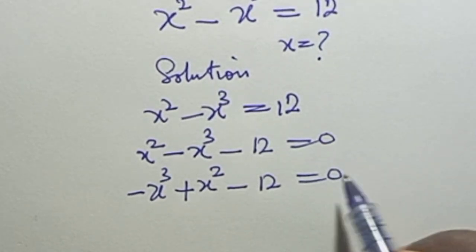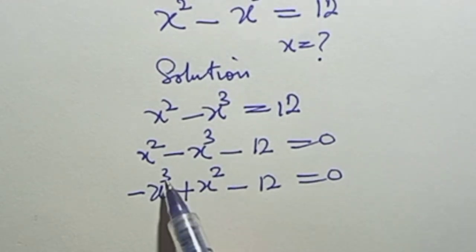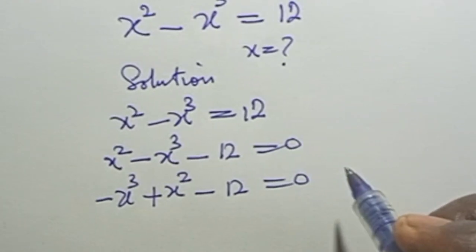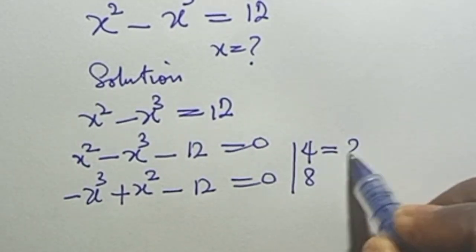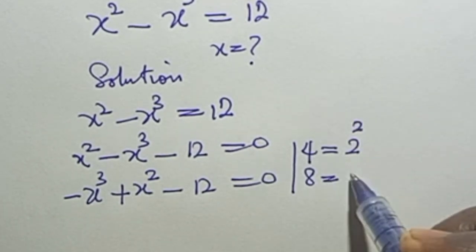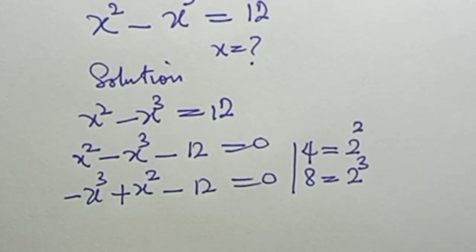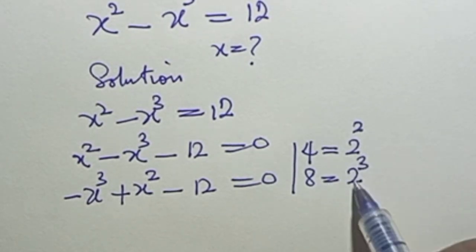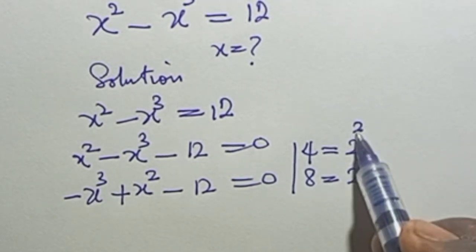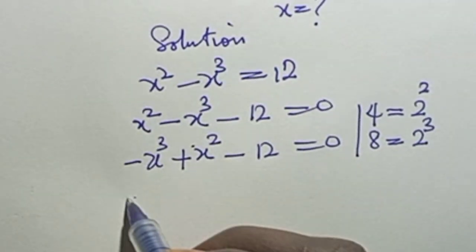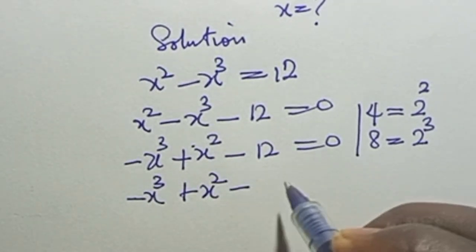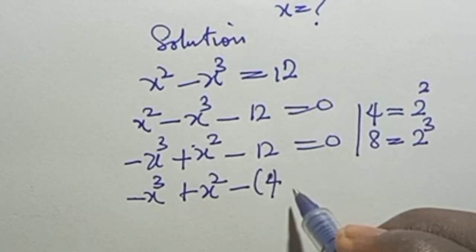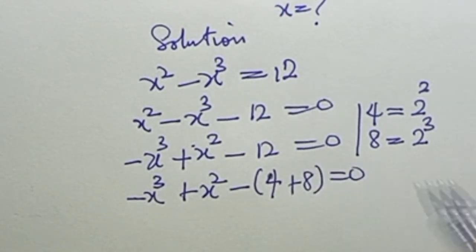We want to derive two numbers from 12 such that they have the same base but respective powers of 2 and 3, like our variable. What comes to mind is 4 and 8: 4 can be written as 2 raised to power 2, and 8 as 2 raised to power 3. The base is the same (which is 2) and the powers are 2 and 3. So bringing this in, it becomes: minus s cubed plus s squared minus 4 plus 8 equals zero.